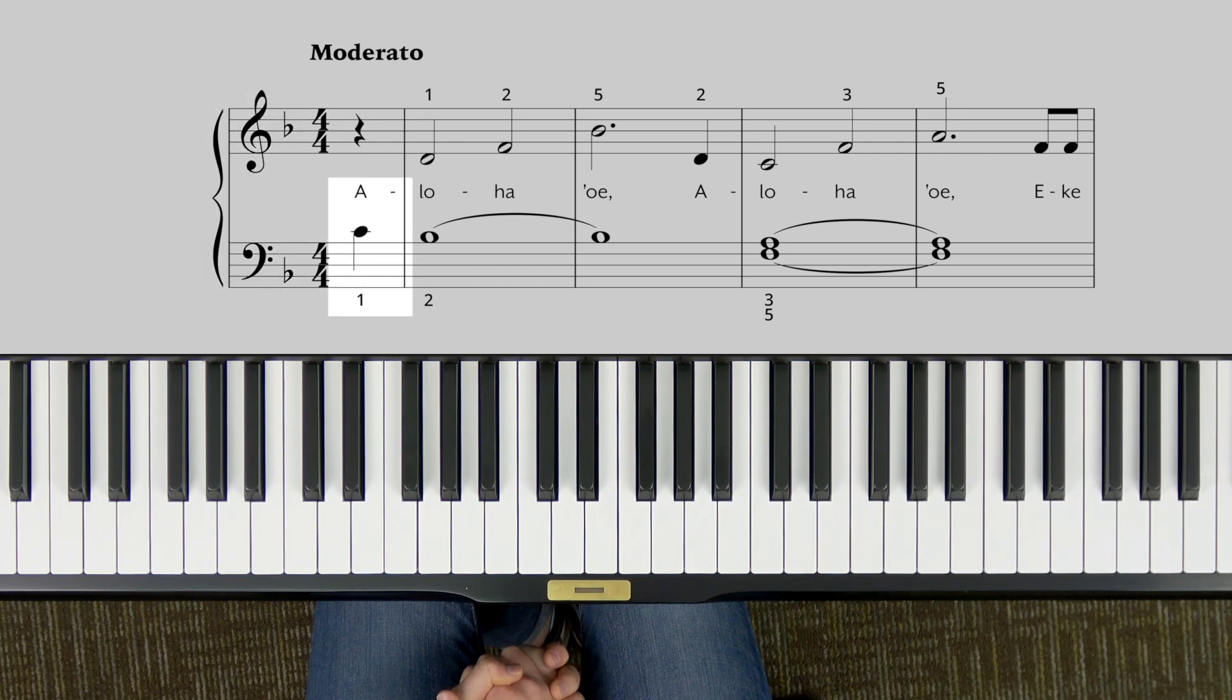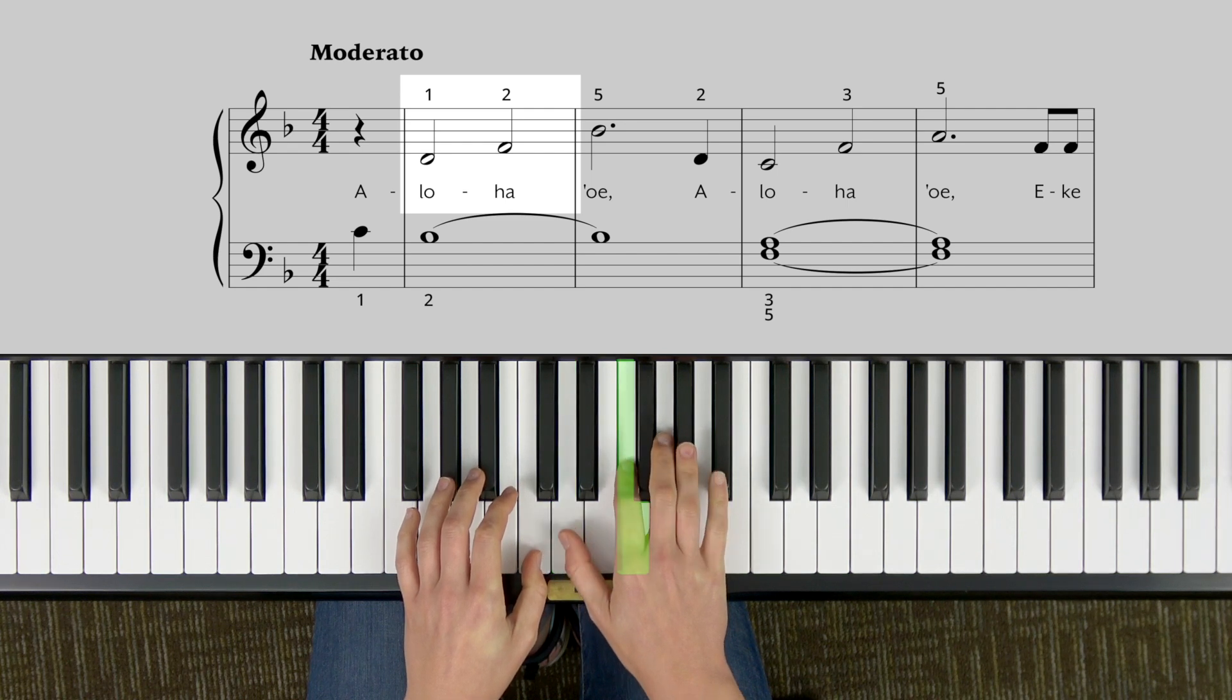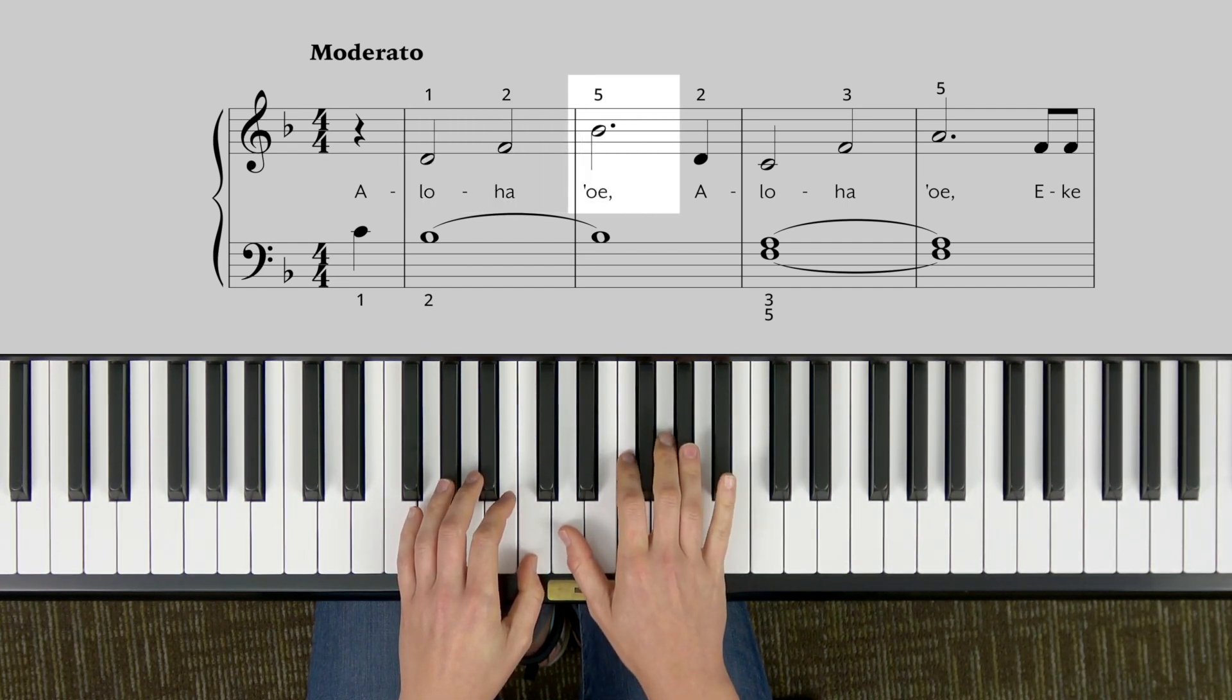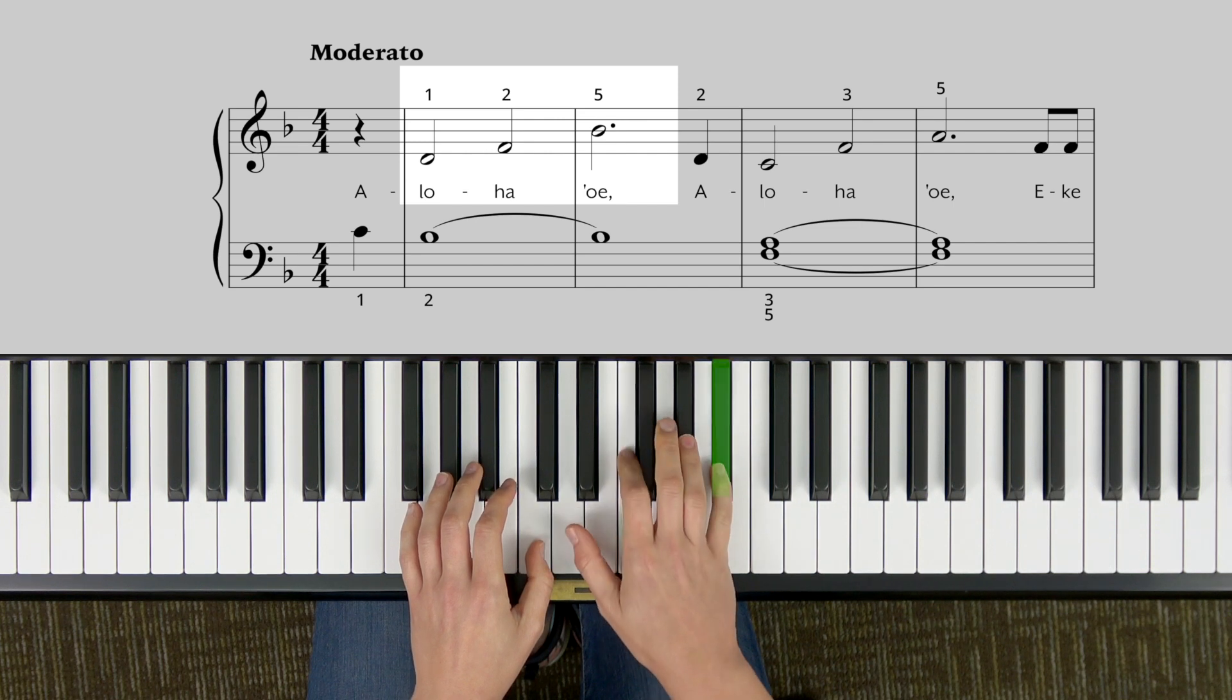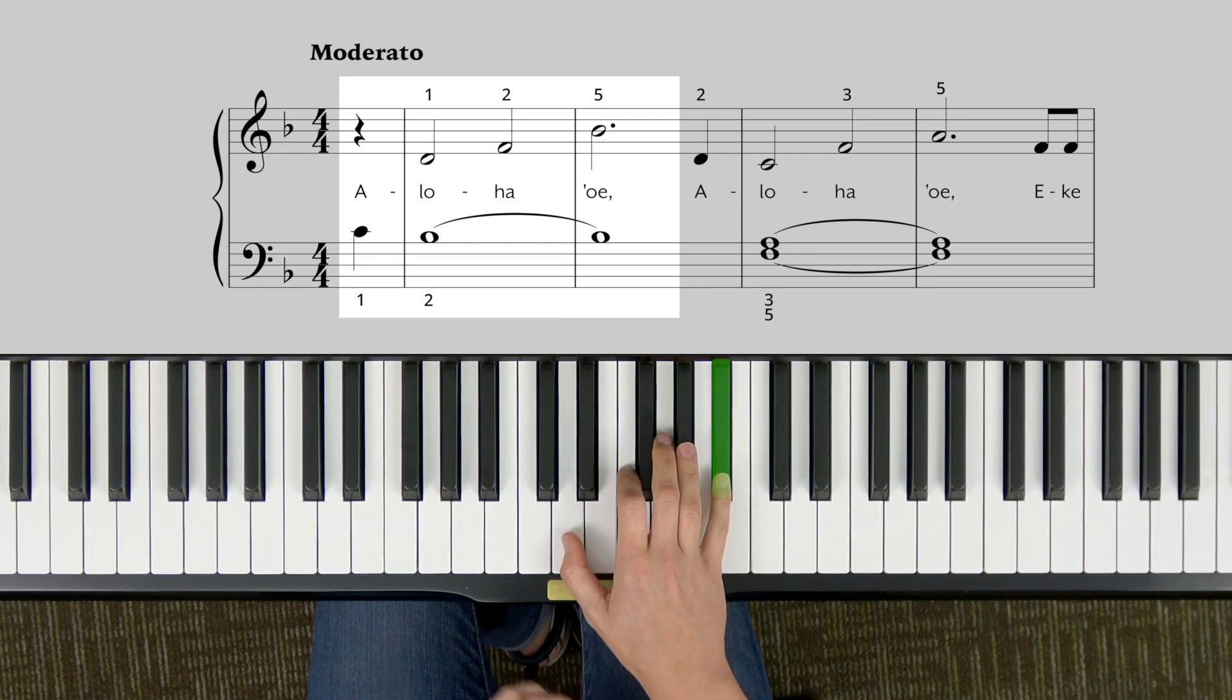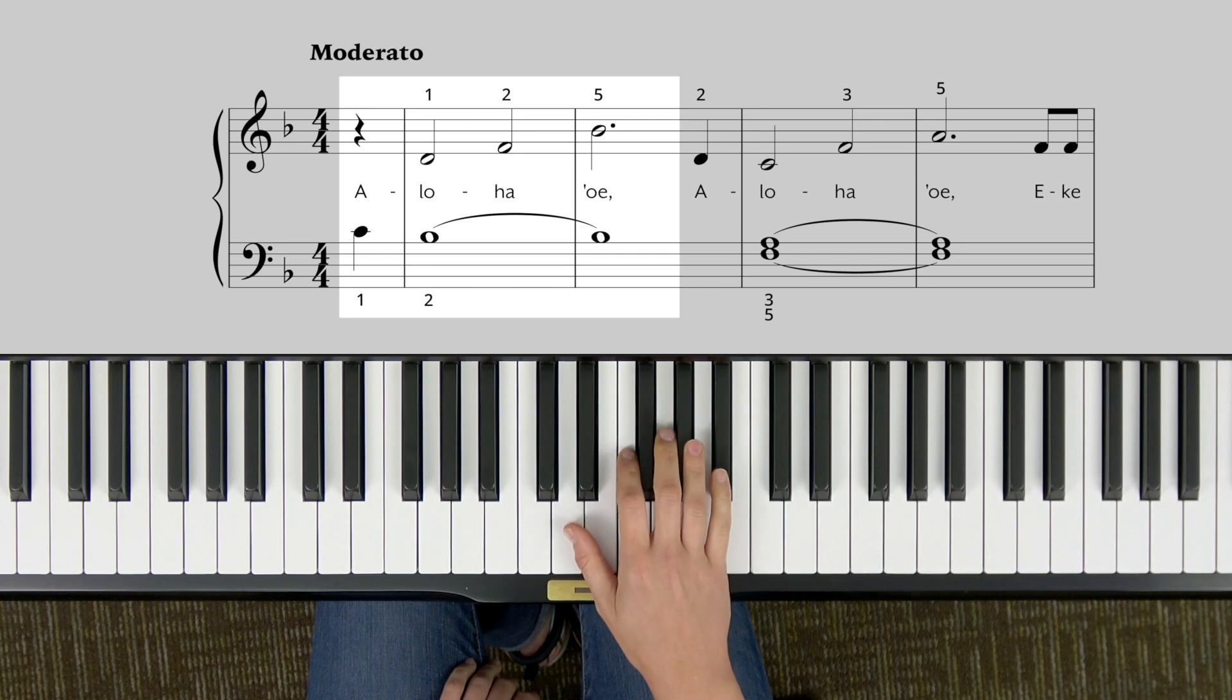You'll notice in our first phrase we already have a B flat. Aloha oi. So you have a B flat on your pinky. So your left hand starts the melody with the thumb. Aloha oi. And you play C, D, F, B flat with your pinky. That's one, one, two, five finger.